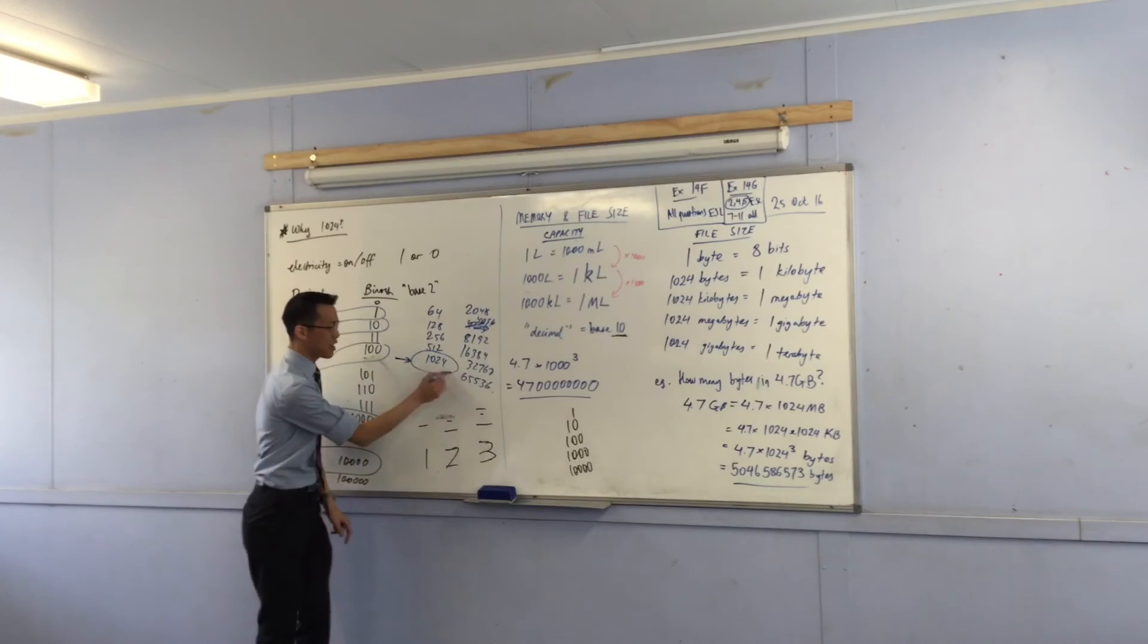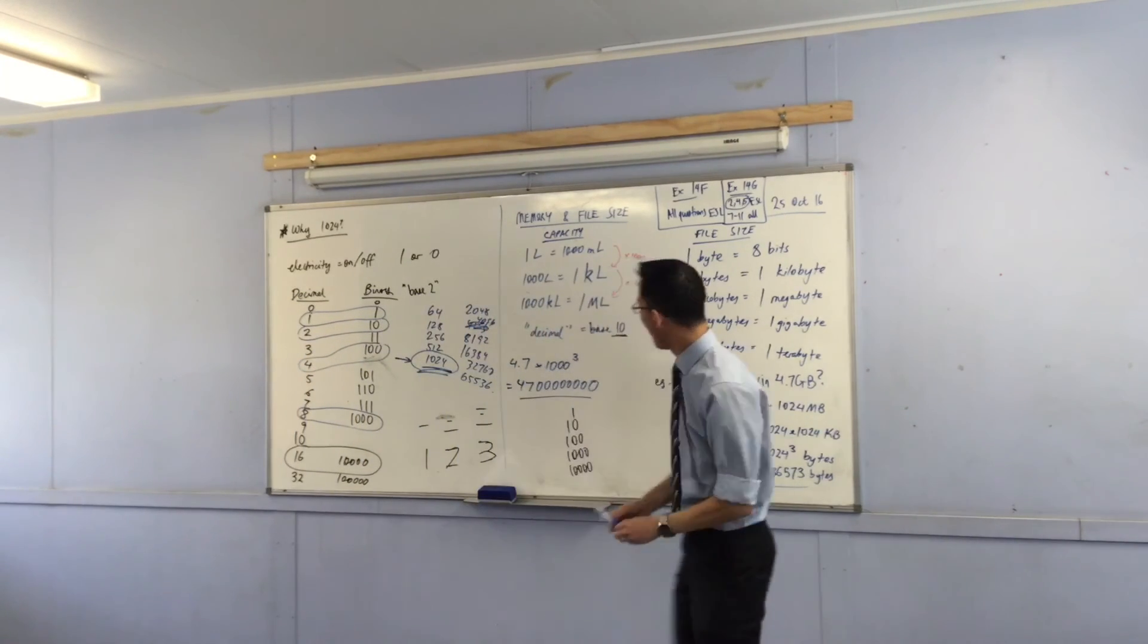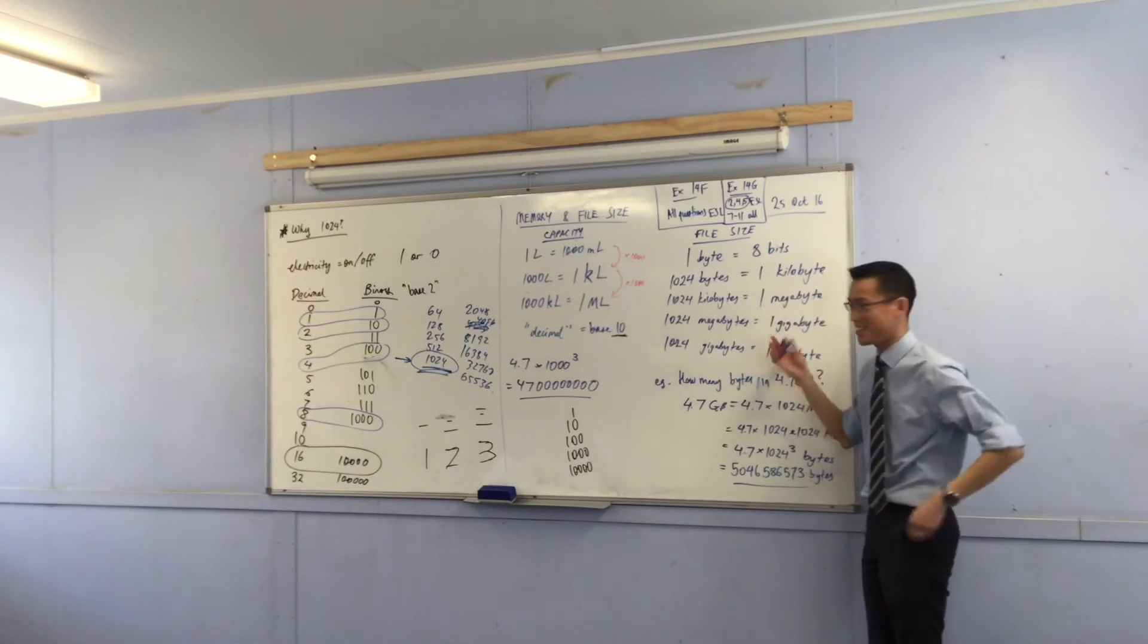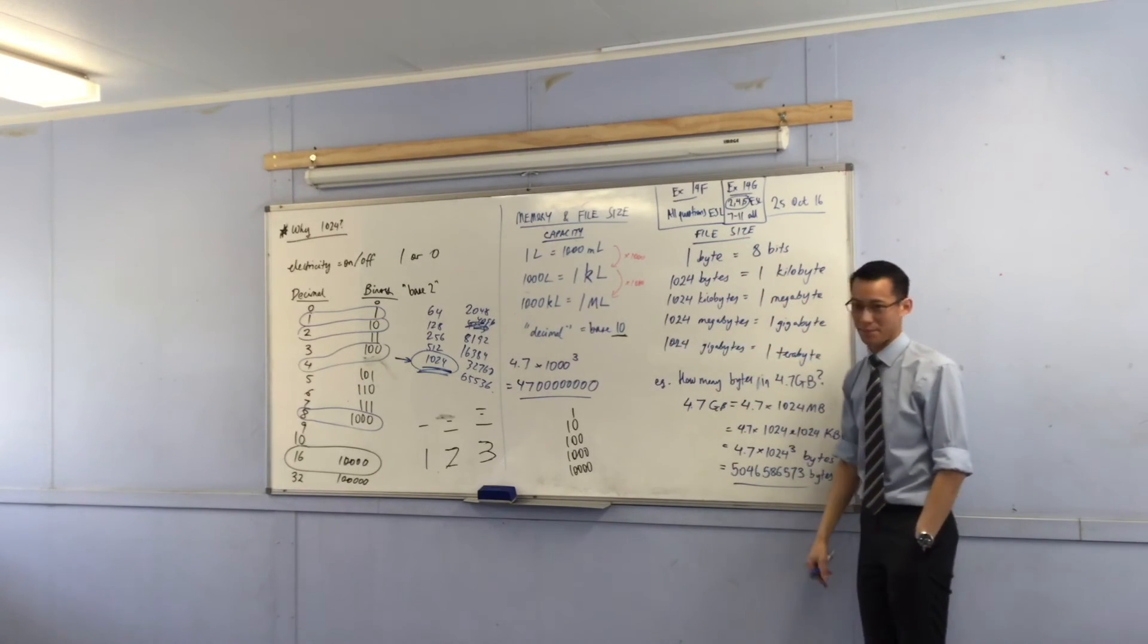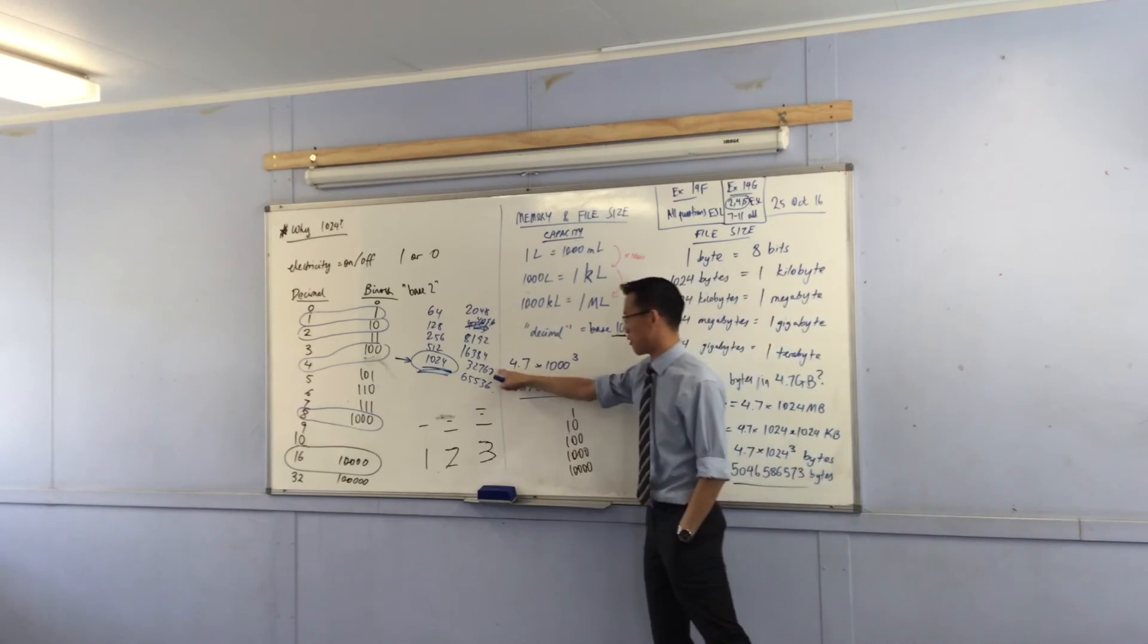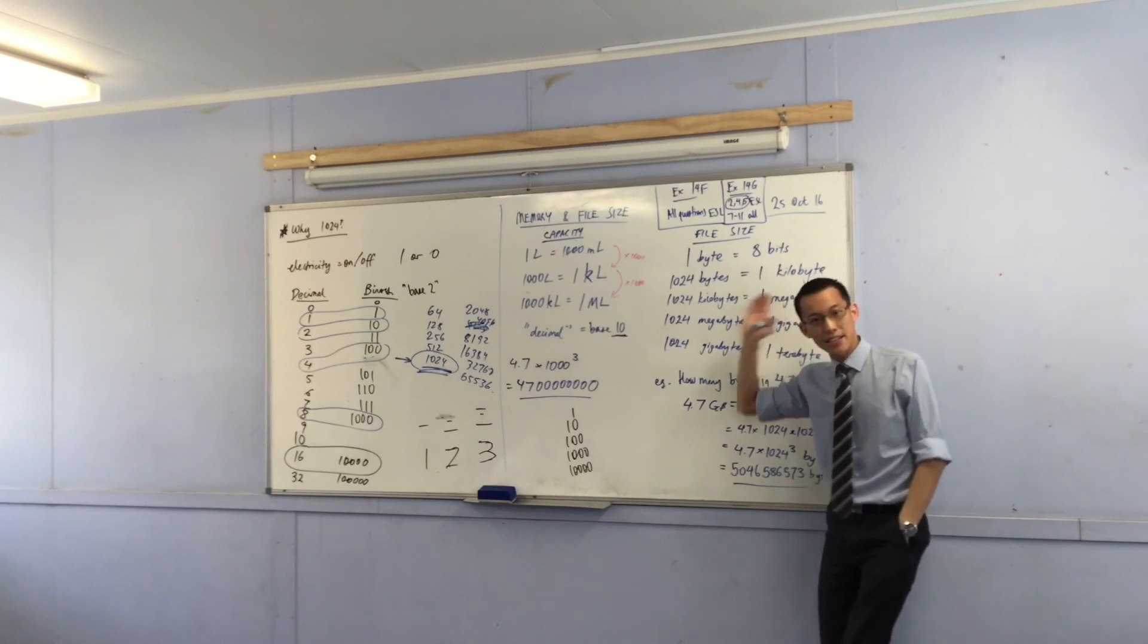So a long time ago computer engineers were like, we have to pick one of these doubling numbers that's kind of close to ours. So they picked this one. It's not a thousand but it's the closest one we can get. And so now you've inherited a system that has almost a thousand but not quite - at least it's better than having to remember one of these numbers that would be completely random. So why is it 1024? It's because computers can only talk in binary, so everything has to be in terms of doubles.